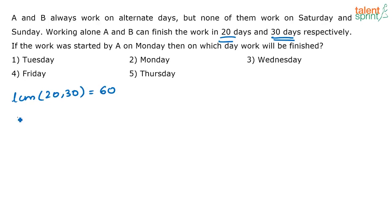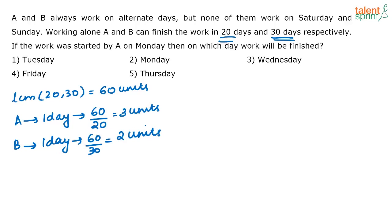If the total units of work is 60, A in one day will do 60 divided by 20, or 3 units of work. Similarly, B in one day will do 60 divided by 30, because B is taking 30 days to finish the work. In one day, B will do 2 units of work.